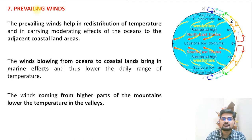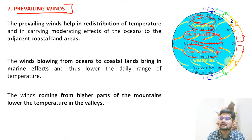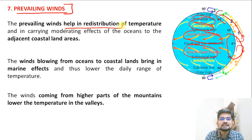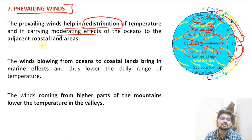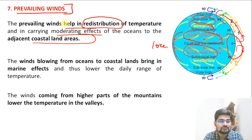The next important factor is prevailing winds. As discussed in the latitudinal heat balance, these winds help transfer energy from surplus regions to deficit regions. Prevailing winds aid in the redistribution of temperature and carry the moderating effects of oceans to adjacent areas. From local winds to planetary winds, wind systems have a significant impact on temperature regulation.